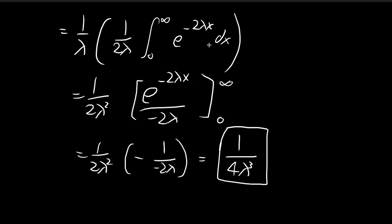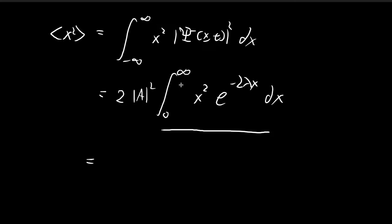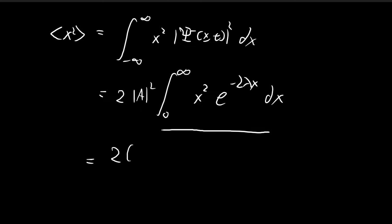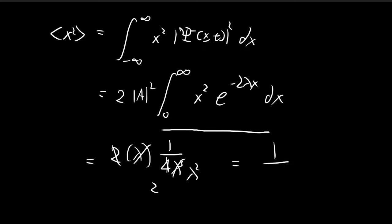Now substituting back: we have the factor of 2, A² = λ, and the integral equals 1/(4λ³). The 2 and the λ from A² combine with 1/(4λ³) to give 1/(2λ²). So the expected value ⟨x²⟩ = 1/(2λ²). That is the final answer.